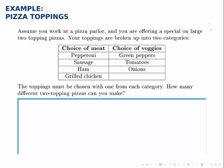So we're making two choices in order: we're choosing the meat to put on the pizza and the veggie to put on the pizza. If we multiply the two together we'll have the total number of ways of making these two choices, and that's just the fundamental counting principle.